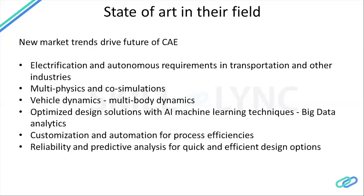The second state-of-the-art trend involves advanced multi-physics and co-simulations. Multi-physics is a domain where two or more physics are used together. For example, if you want to simulate the noise of a closing door, the noise relates to the NVH domain while the door closing can be simulated as a durability domain. When we combine both, it becomes a multi-physics problem. State-of-the-art companies are using CAE for multi-physics simulation nowadays.